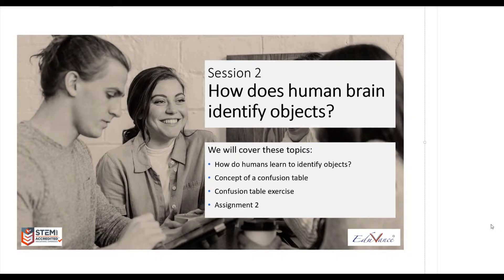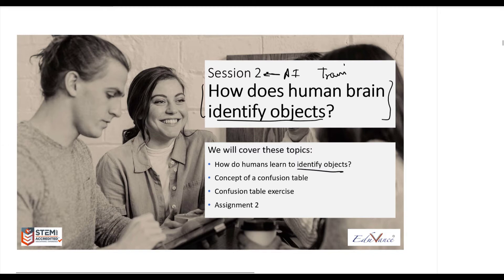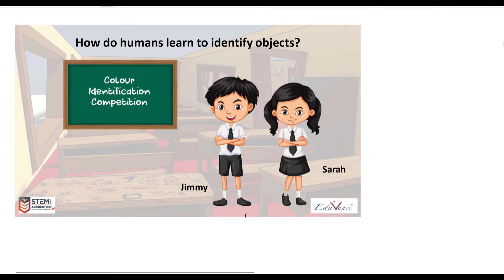Hi guys, this is John here. Today I will be starting session 2 of our AI course. Session 2 looks at how the human brain identifies objects and how we train it to do so. We will also look at a concept called the confusion table, which measures the amount of confusion, and we'll have a confusion table exercise and an assignment.